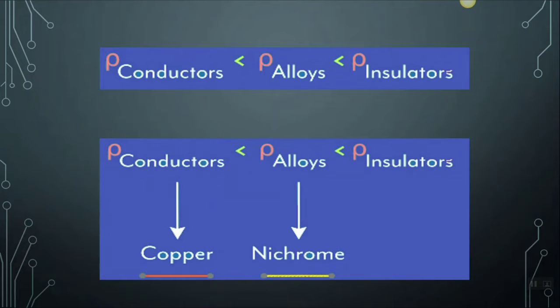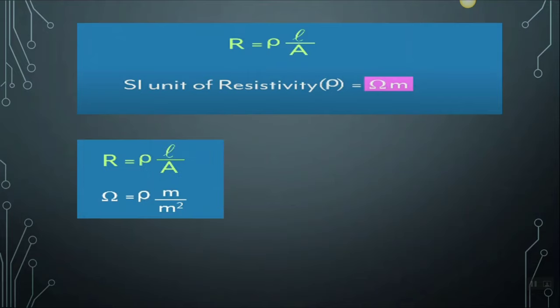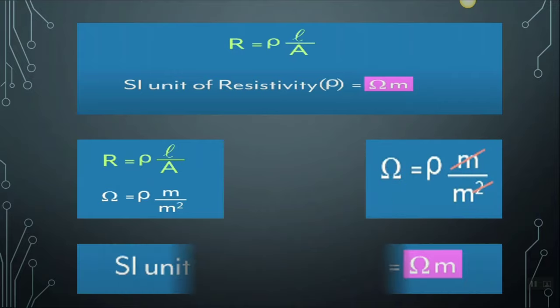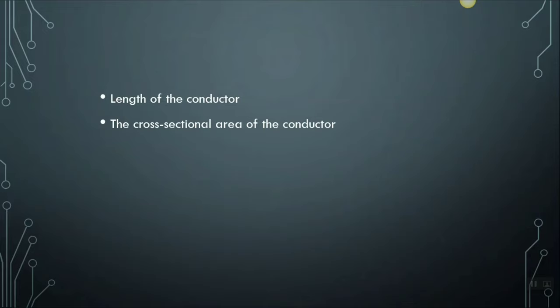Nichrome is an alloy whereas copper is a good conductor of electricity, and that's why the current reading increased as the material changed to copper. The SI unit of resistivity is ohm-meter. The unit of resistance is ohm, the length is in meters, and the cross-sectional area is in meters squared — cancelling and transposing the units gives us the SI unit of rho as ohm-meter. So the resistance of a conductor depends on three factors: first, the length of the conductor; second, the cross-sectional area of the conductor; and third, the nature of the material of the conductor.